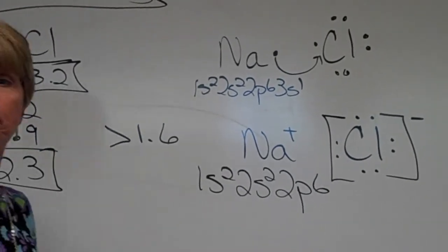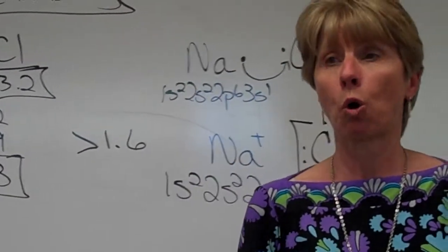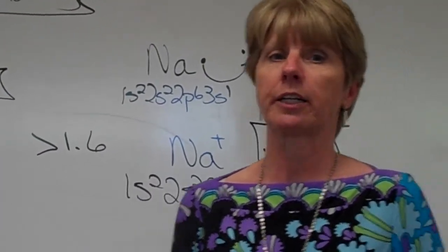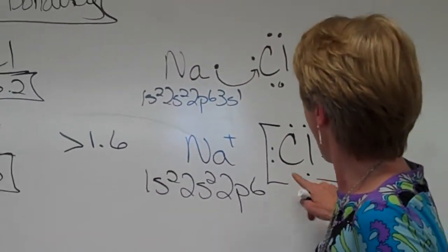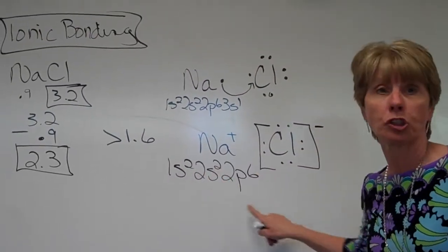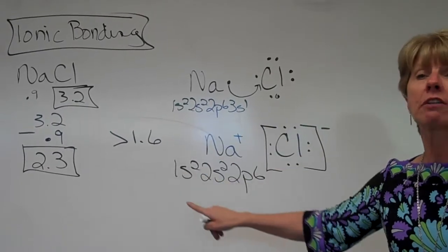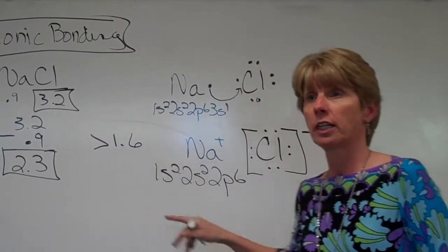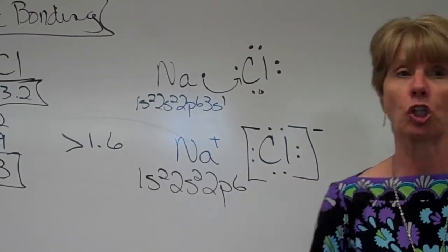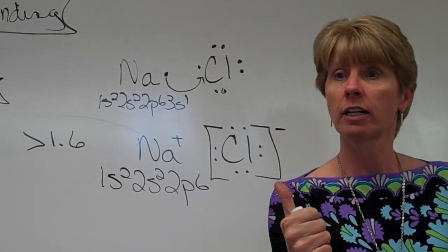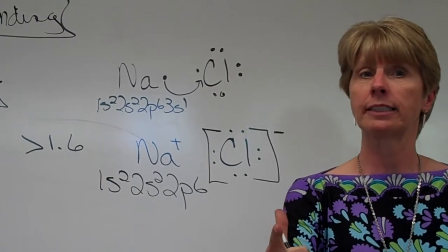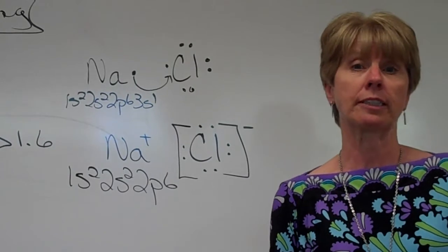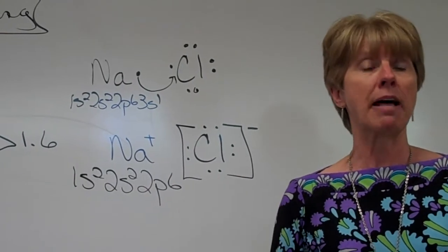Ionic compounds are never called molecules. Ionic substances are salts. The general term for an ionic substance is a salt. Now ionic substances are hard. They have high melting points. They're soluble in water. They conduct electricity when dissolved in water, or when they're melted.